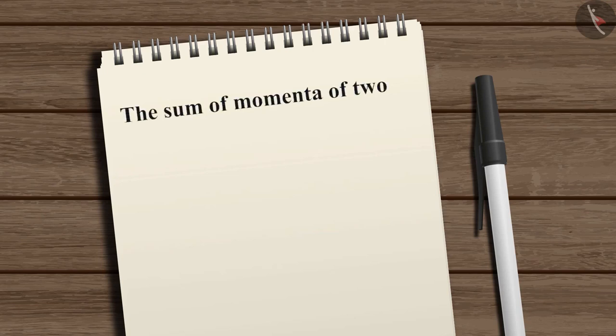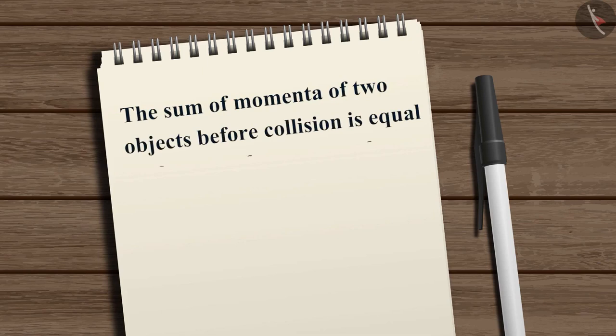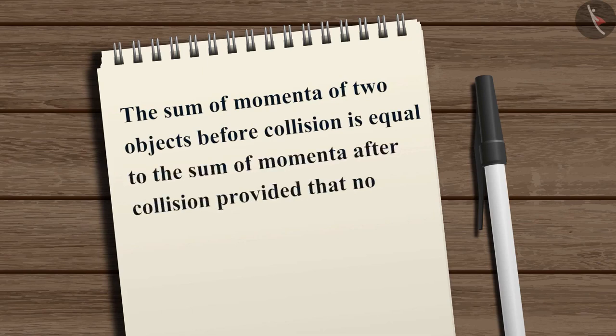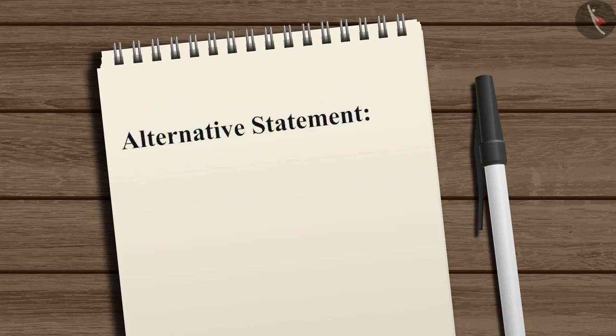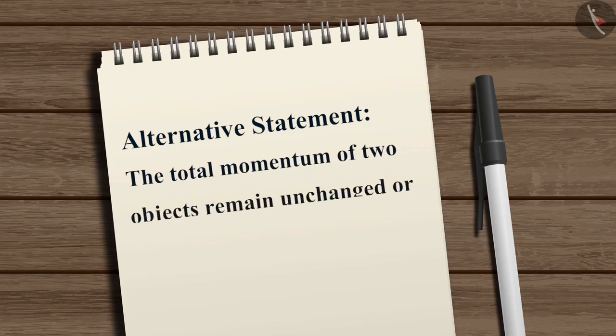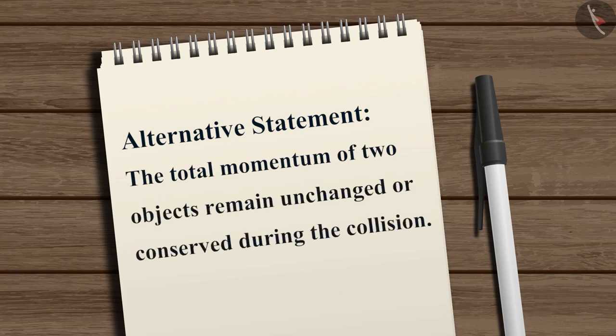Hence, from this ideal collision experiment, we can state that the sum of momenta of two objects before collision is equal to the sum of momenta after collision provided that no external unbalanced force acts on them. This is known as the law of conservation of momentum. An alternative statement is: the total momentum of two objects remains unchanged or conserved during the collision.